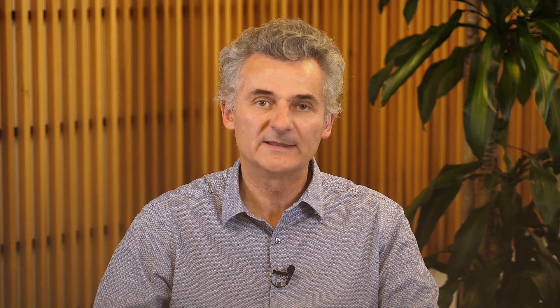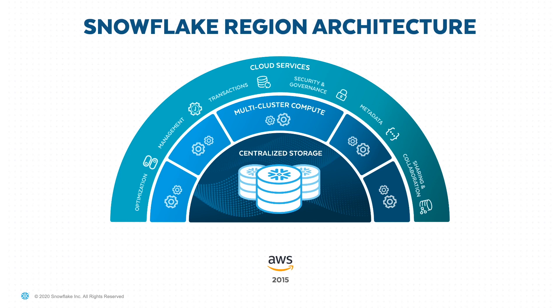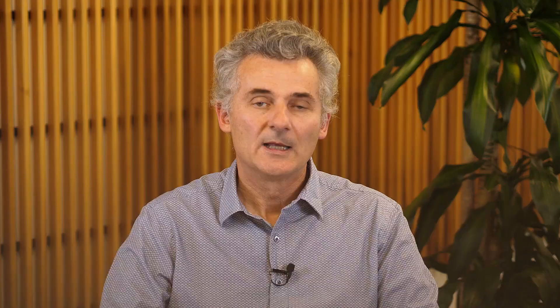Initially, the Snowflake cloud region was only ported to AWS. We later ported it to Azure Cloud in 2018, and then to GCP just this year. We ported Snowflake by building a cloud abstraction layer, abstracting the specificity of the underlying cloud infrastructure. This way, the upper layers of the Snowflake software are completely cloud-agnostic, and the same applies to any application running on our cloud data platform. Avoiding any cloud lock-in is one of the key benefits of using Snowflake.